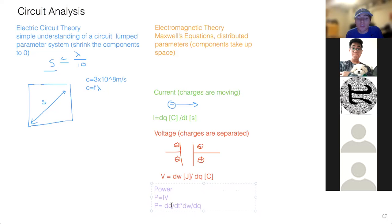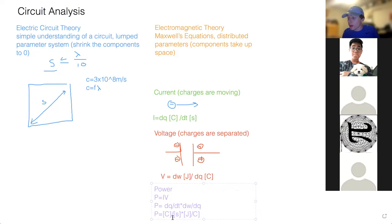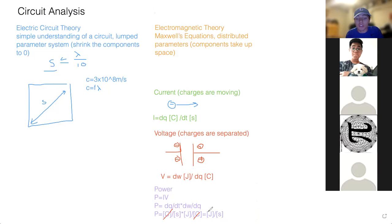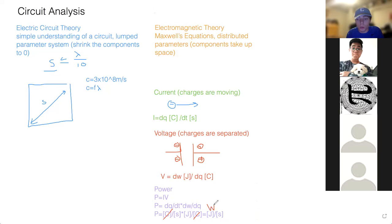Since we know those, look at how the units cancel. Power equals charge over seconds times joules over charge — the Coulombs cancel — giving us joules per second. Energy is measured in joules, so power is work per unit time, which we can write as dw/dt. Those are the basics: current is charge per unit time, voltage is work per unit charge, and power is work per unit time.